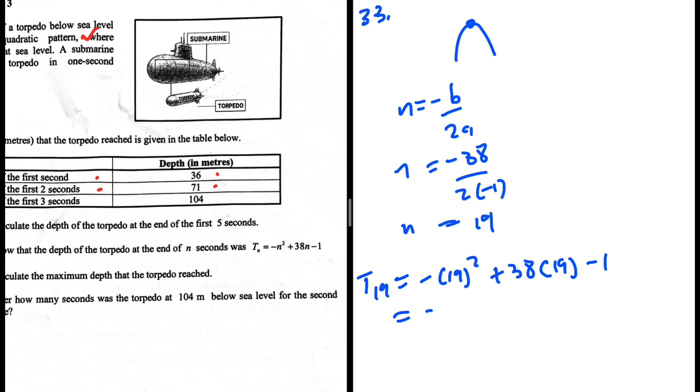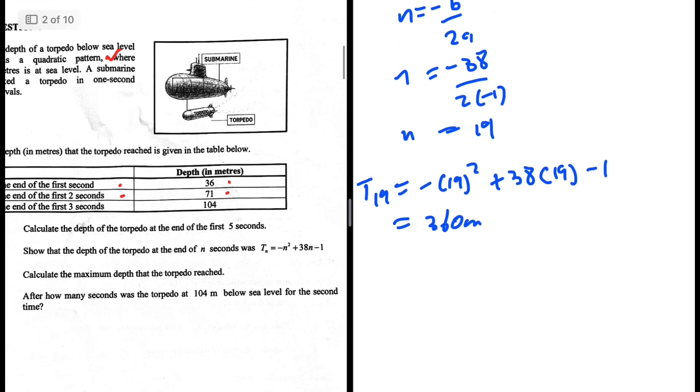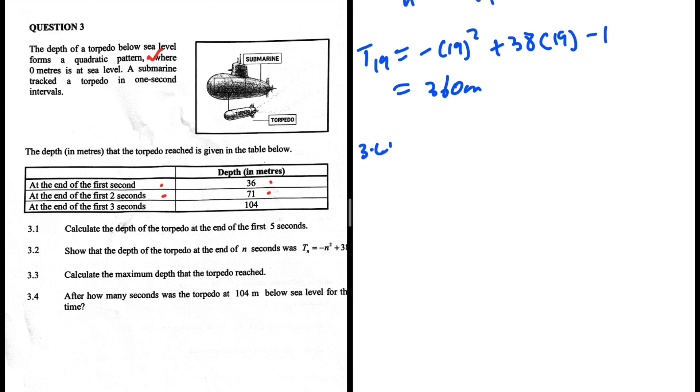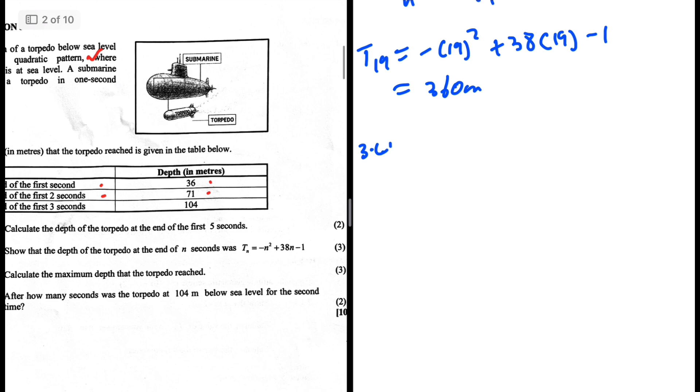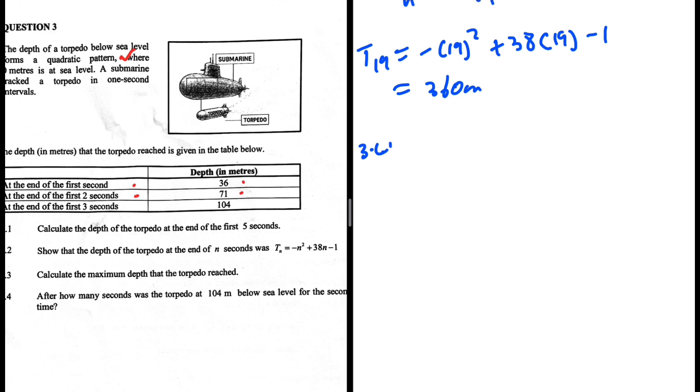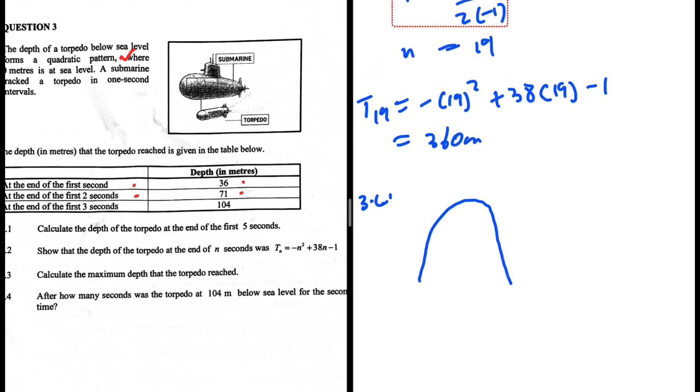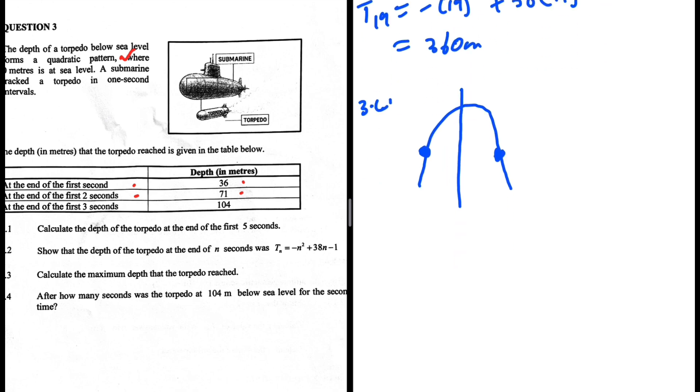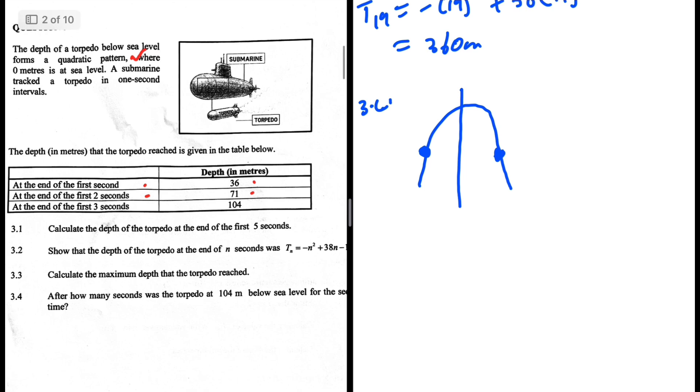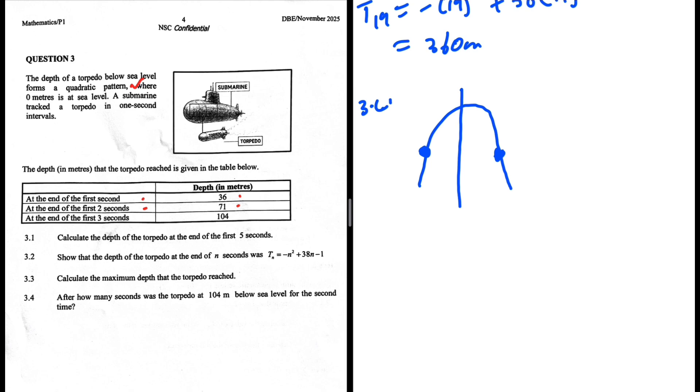So that is the maximum depth. 3.4: After how many seconds was the object at 104 below sea level for the second time? The fact that this is concave down means it can reach one point two times. It can reach the point at that point and then again right there. It's a valid question. We are looking for minus n squared plus 38n minus 1 equals 104. We're looking for the values of n for which it was 104 meters below sea level.